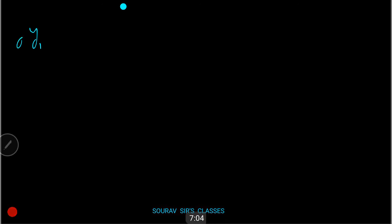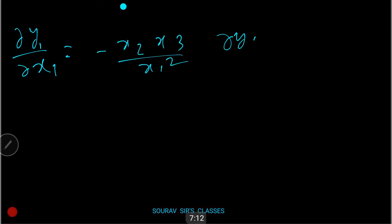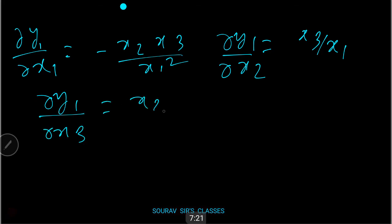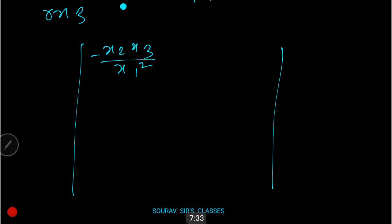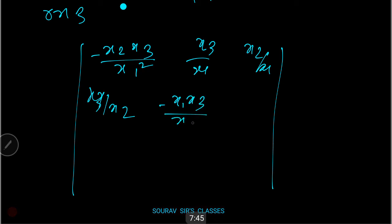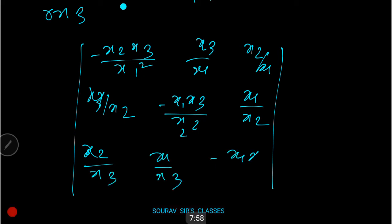This entire Jacobian is all about partial derivatives. We need: ∂y1/∂x1 = −x2·x3/x1², ∂y1/∂x2 = x3/x1, ∂y1/∂x3 = x2/x1. Continuing: ∂y2/∂x1 = x3/x2, ∂y2/∂x2 = −x1·x3/x2², ∂y2/∂x3 = x1/x2. And: ∂y3/∂x1 = x2/x3, ∂y3/∂x2 = x1/x3, ∂y3/∂x3 = −x1·x2/x3².